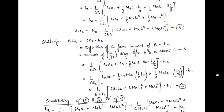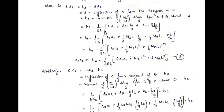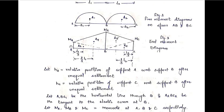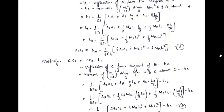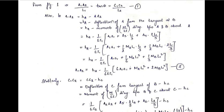Substituting: A1·a1 + a3·(l1/3) + a4·(2l1/3). Here a3 = (1/2)·MA·l1 and a4 = (1/2)·MB·l1. Putting in these values, solving, taking LCM, and taking 6 as common, we get the expression for a1a2. This is equation number 2.